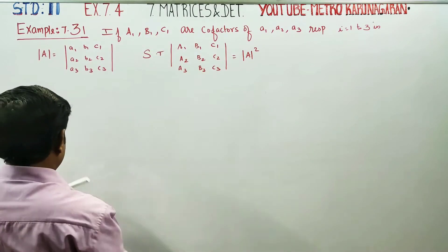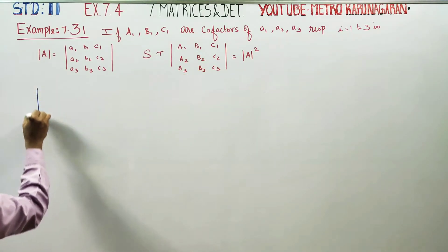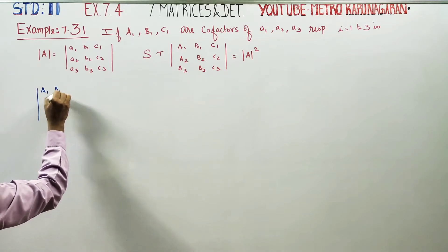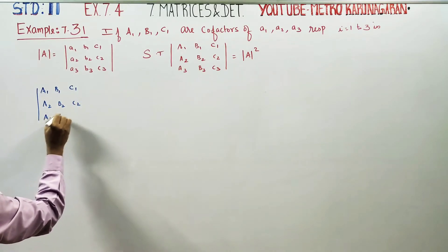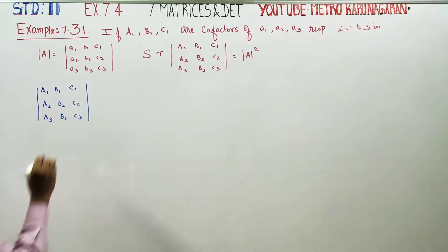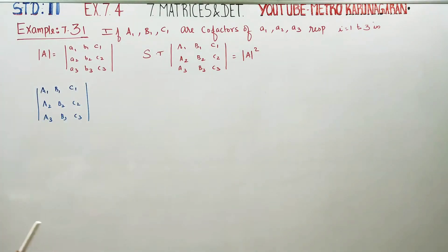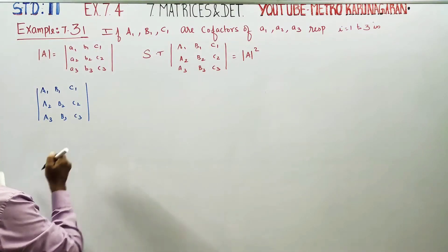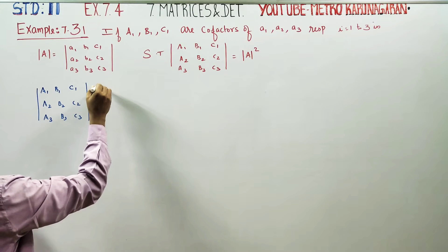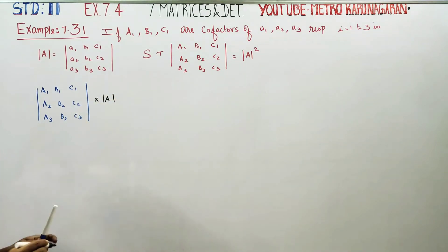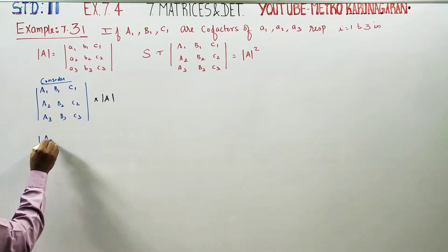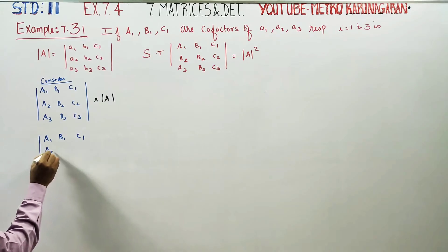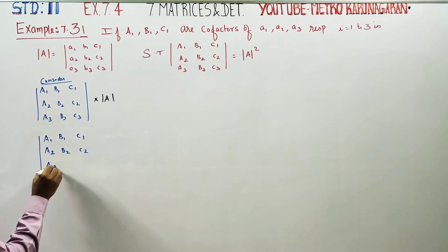Now I am going to show that by starting with LHS. On the LHS, we have the matrix with elements a1, b1, c1, a2, b2, c2, a3, b3, c3. Let's start the LHS expansion.